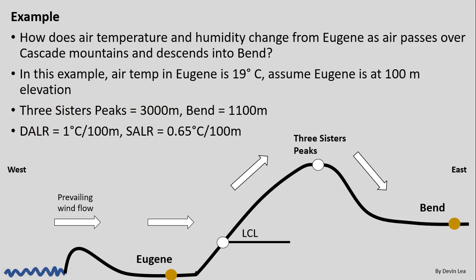The rates we will be using: our dry adiabatic lapse rate — used when our air is not saturated — is a change of 1°C for every 100 meters in elevation. For our saturated adiabatic lapse rate, when our air is saturated, we will have a change of 0.65°C per 100 meters. That slightly smaller rate is mainly tied to latent heat: some of the temperature that is being released when we have condensation of water vapor causes that difference from the dry adiabatic lapse rate.